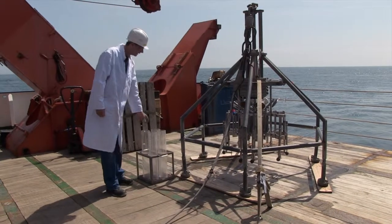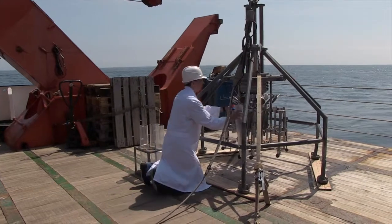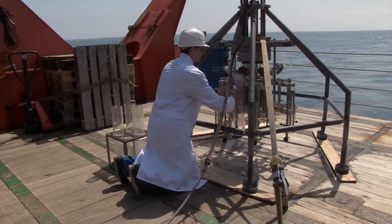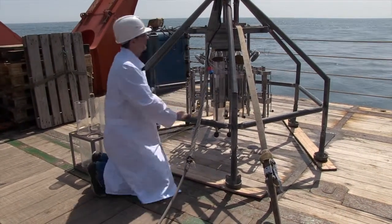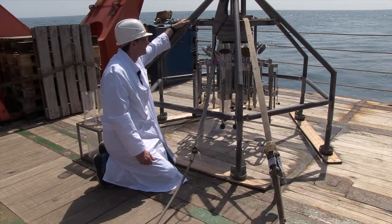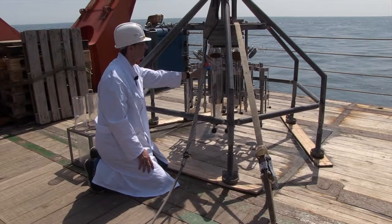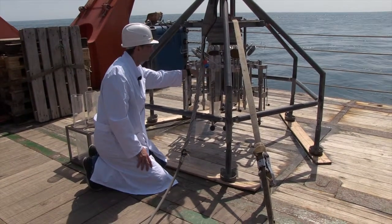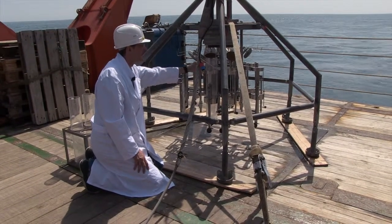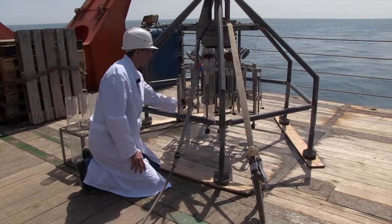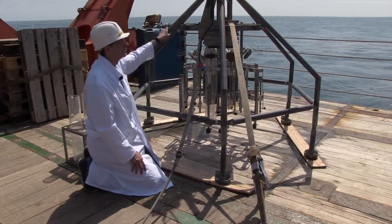The multicorer works with core cutters, which are fixed into the mount. When the multicorer reaches the seabed, the weight rams the core cutters into the seabed and gathers a sediment core with supernatant water. The tubes are firmly closed at the top and bottom, and the multicorer is lifted onto the deck.